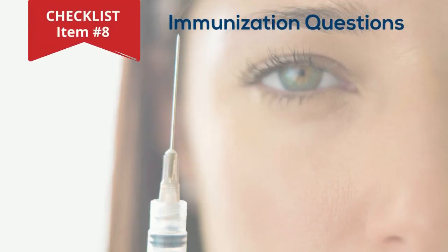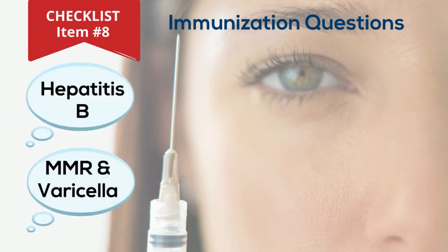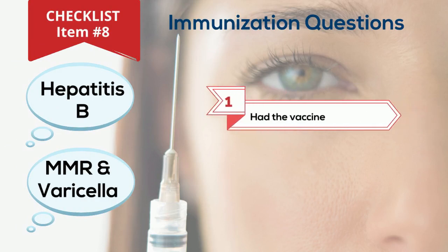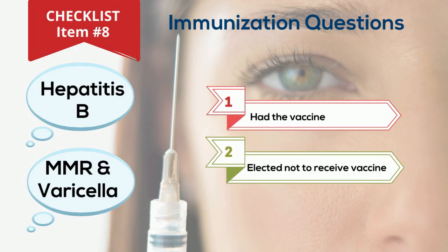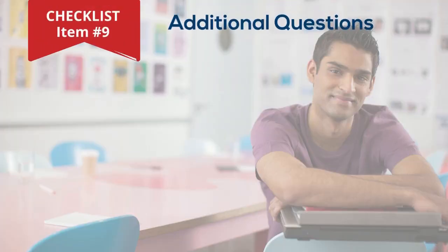Checklist number eight asks questions about immunizations, specifically hepatitis B and MMR — measles, mumps, and the three-day measles — and varicella, which is chickenpox. The questions focus on whether you have taken the vaccine, elected not to receive the vaccine, or are in the process of getting the vaccine.